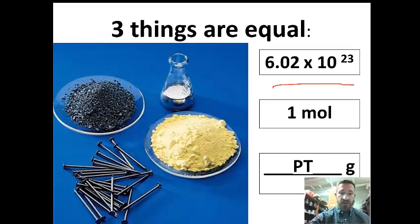Let's see if you can recognize these. The yellow stuff is sulfur. These are nails, which are iron. This is iodine, I2. That might be one you're not sure about or you wouldn't recognize.